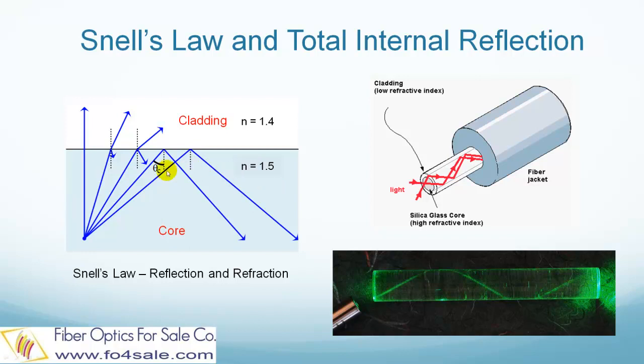The important point here is the critical angle θc. If light enters the fiber less than θc, it will quickly leak out of the fiber and won't travel long.